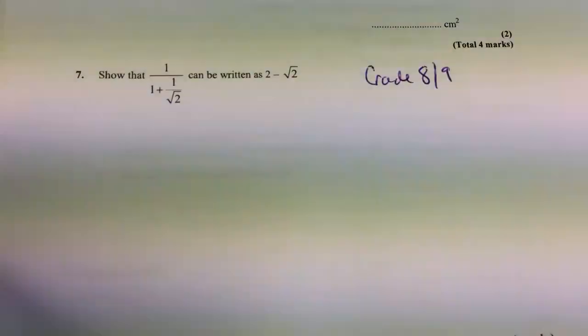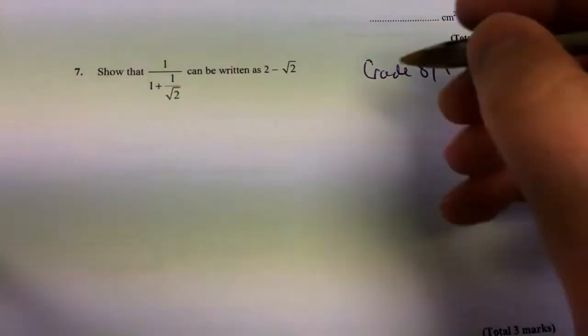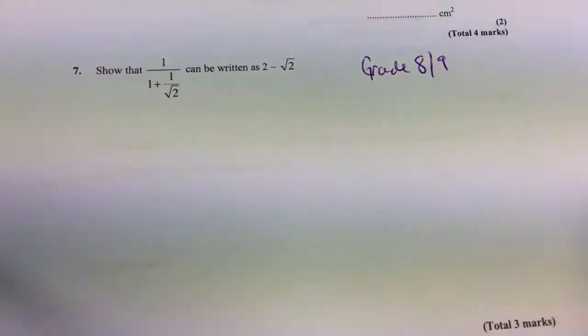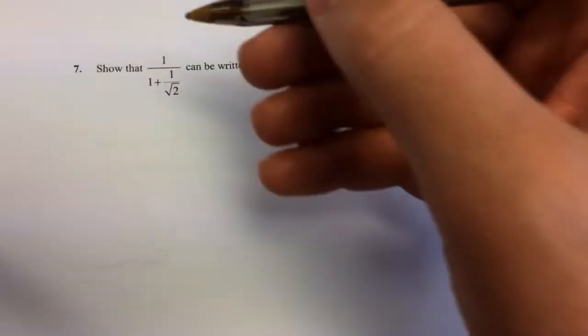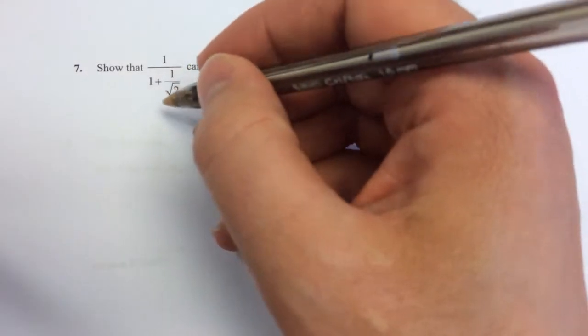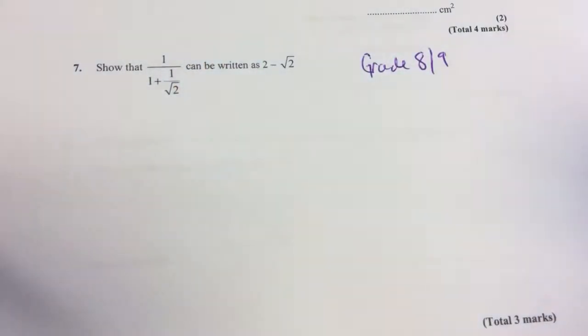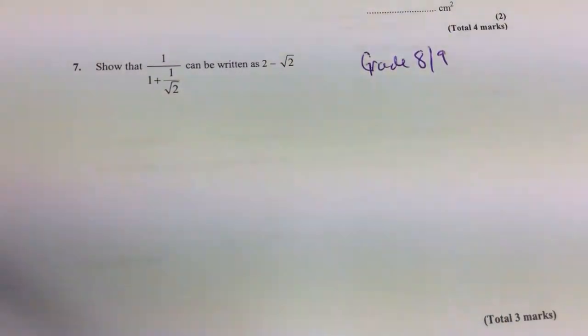Hello and welcome to Martin Maths. We're doing some higher grade 8 and 9 questions and looking at surds. I've got 1 over (1 plus 1 over root 2). I've got to write it in the form 2 minus root 2.